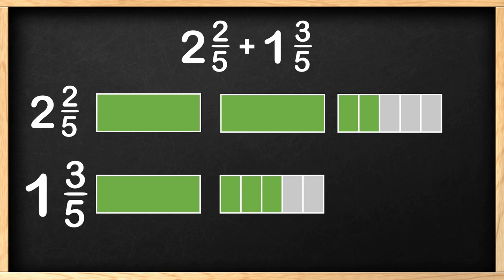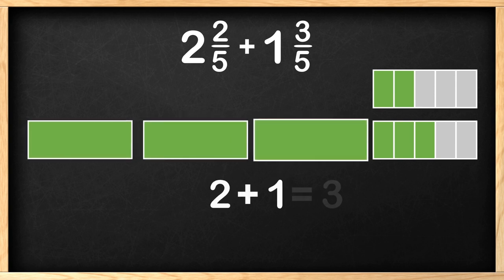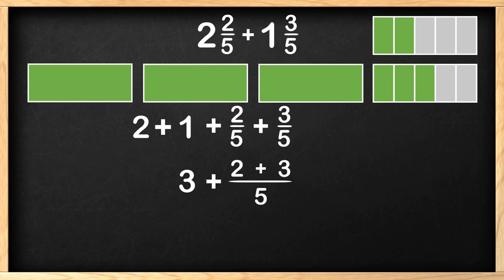To add these mixed numbers, we first start by adding the whole numbers together. 2 plus 1 is 3. Now we can start adding the fractions together. You may have learned this already, but to review, when adding fractions, you need to have the same denominator, which is the bottom number in the fraction.